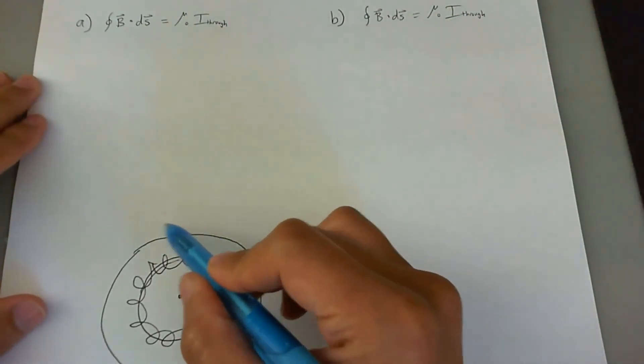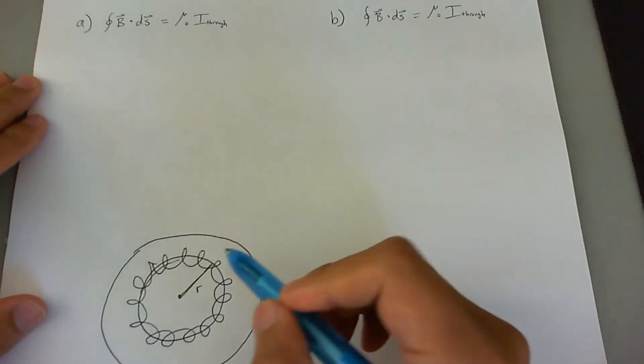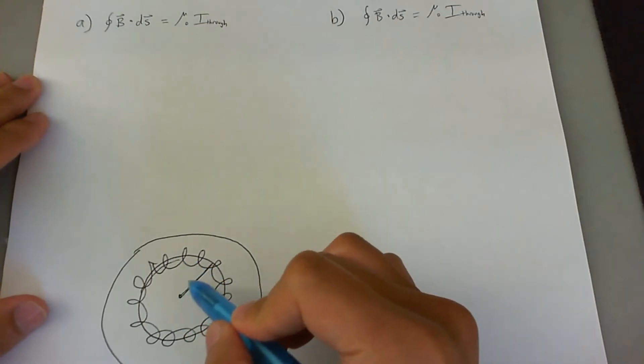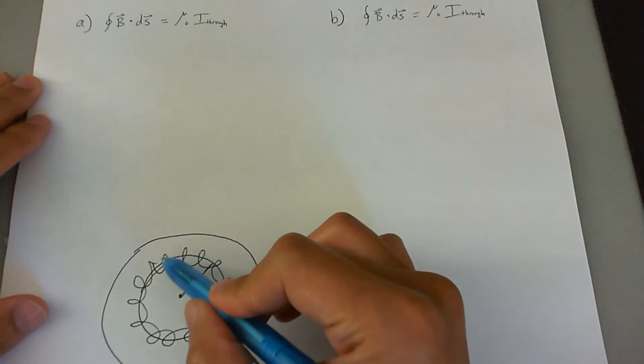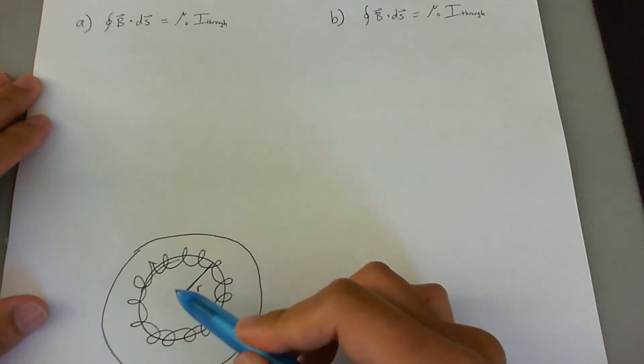It could either mean on the outer side where r is greater than little r, or inside the circle where r is less than little r. So it's still outside of the coiled solenoid that goes into a circle, but it's on the smaller radius of the loop.